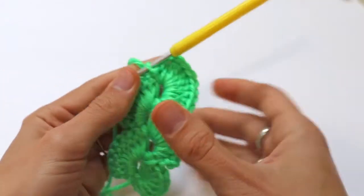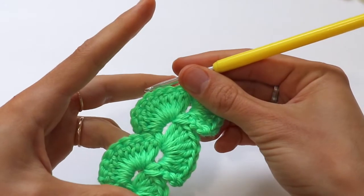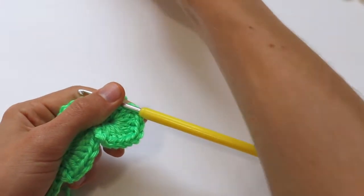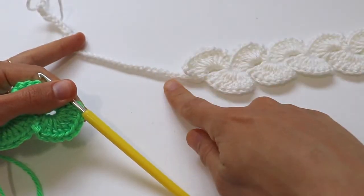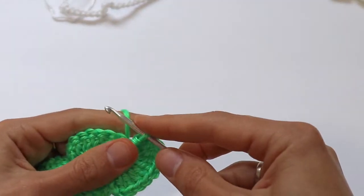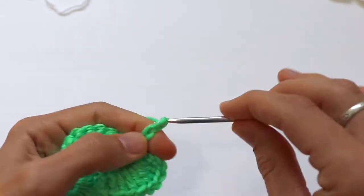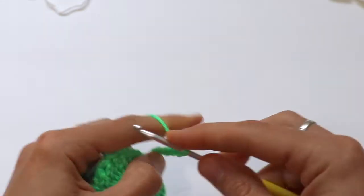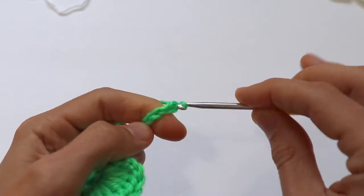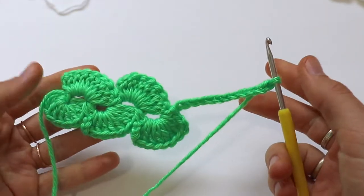So if you want to make a headband, you do not cut the yarn and you continue making chain, like in this one, in the white one. Make a long chain, a little bit more than the circumference of your head.